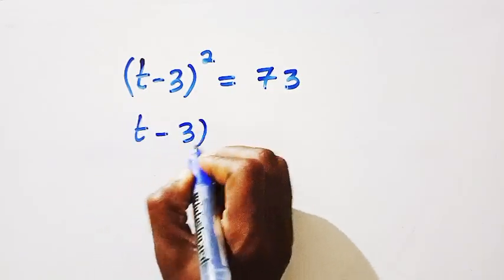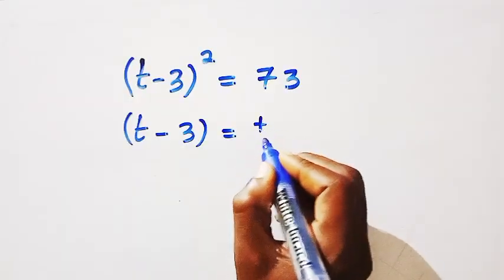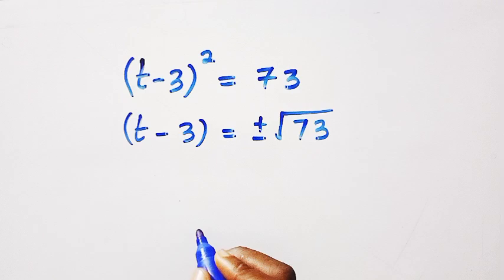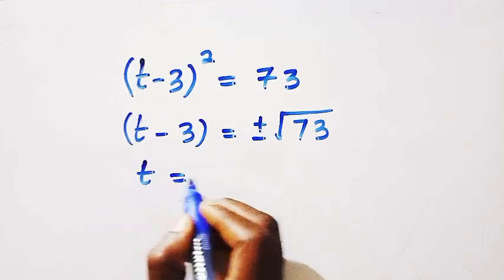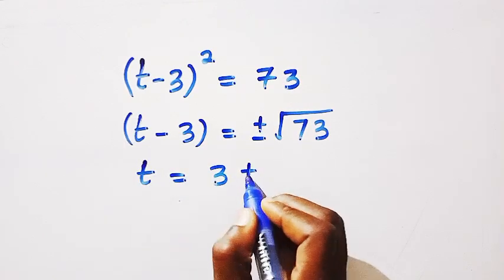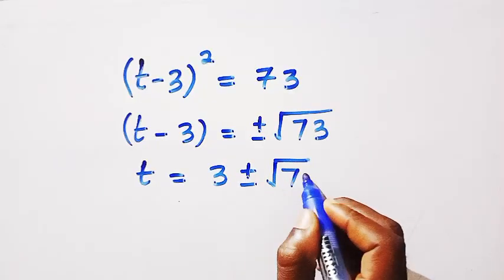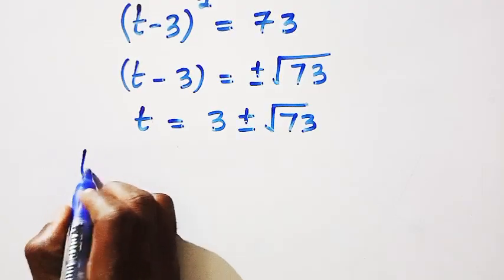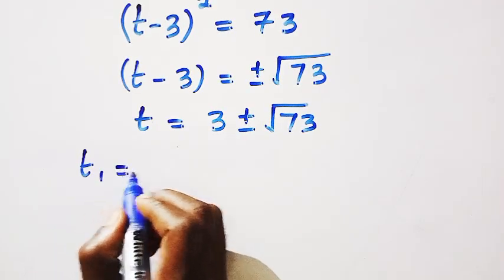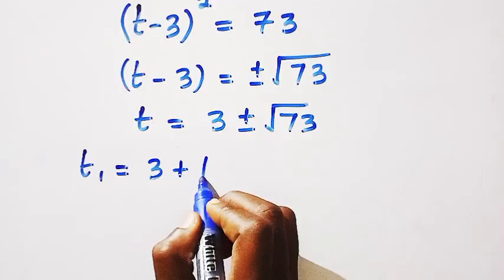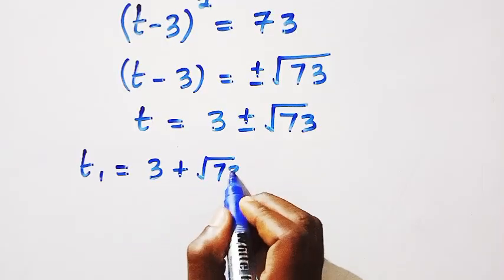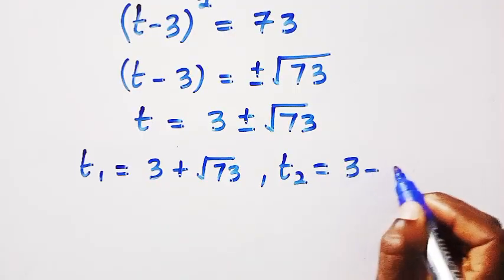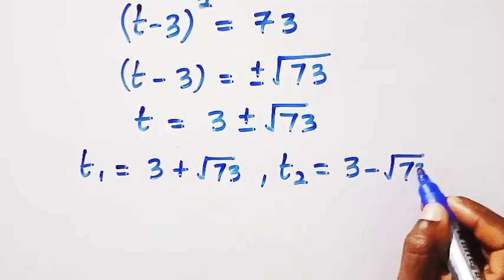By squaring both sides, so we are going to have, so taking the square root of both sides, we have t minus 3 equals plus or minus the square root of 73. And here we have t equals 3 plus or minus the square root of 73. And with this, we have t1 equals 3 plus the square root of 73 and t2 equals 3 minus the square root of 73.